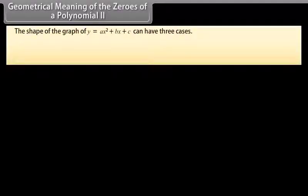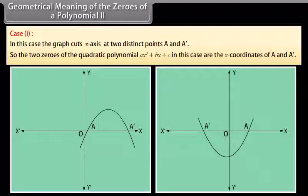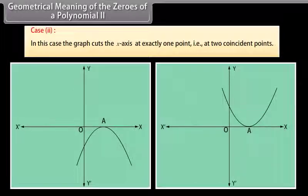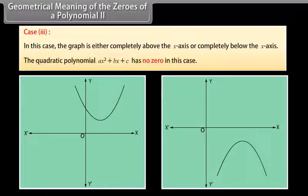The graph of y equals ax squared plus bx plus c can have three cases. Case 1: the graph cuts the x-axis at two distinct points a and a-bar, so the two zeros are the x-coordinates of those points. Case 2: the graph cuts the x-axis at exactly one point — two coincident points a and a-bar coincide to become one point a. Case 3: the graph is either completely above or completely below the x-axis and does not cut it at any point, so the quadratic polynomial has no zero in this case.